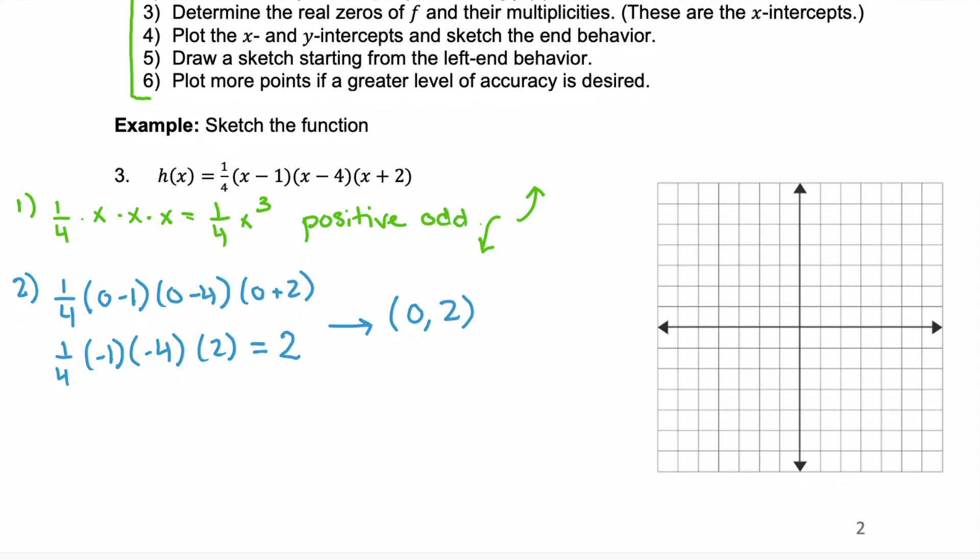Now, step three. Step three is determining the real zeros of f and their multiplicities. This is already factored for us so, we use that zero product property to find those zeros. The first x - 1 = 0. That gives us a zero of x = 1 which is the point (1, 0). x - 4, that's a value of x = 4 or an x-intercept of (4, 0). And our last one x + 2 = 0, this is x = -2 which is the point (-2, 0).